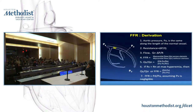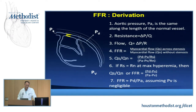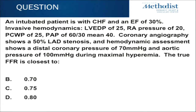What we're doing with FFR is using the change in pressure as a surrogate for flow, with the assumption that resistance distally is essentially negligible, allowing us to use proximal and distal pressure measurements as a surrogate for flow ratio. What's tricky here is that the CVP is 20. So the true FFR is calculated as: numerator is 70 minus 20, denominator is 100 minus 20 — because the outflow resistance is at the coronary sinus. The correct answer is 0.625.